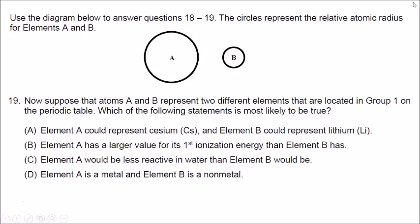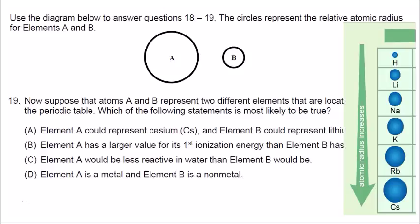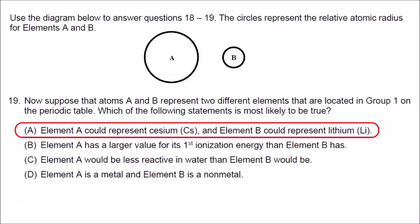Number nineteen: atoms A and B are in group 1. The smaller atom B might be lithium, and the larger atom A might be cesium. Choice A is correct based on that. Element A, being larger, would have a smaller ionization energy — so choice B is incorrect. Larger atoms are more reactive as metals, so cesium is much more reactive, meaning A would be more reactive than B. Both are metals. Correct answer is choice A.